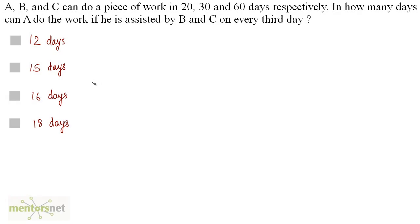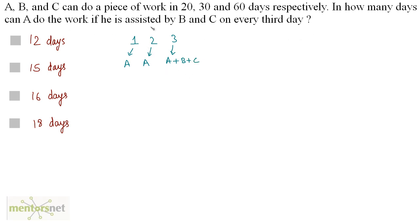A, B, and C can do a piece of work in 20, 30, and 60 days respectively. In how many days can A do the work if he is assisted by B and C on every 3rd day? On day 1, A works alone; on day 2, A works alone; on day 3, all three — A, B, and C — work together. This is the pattern of work.